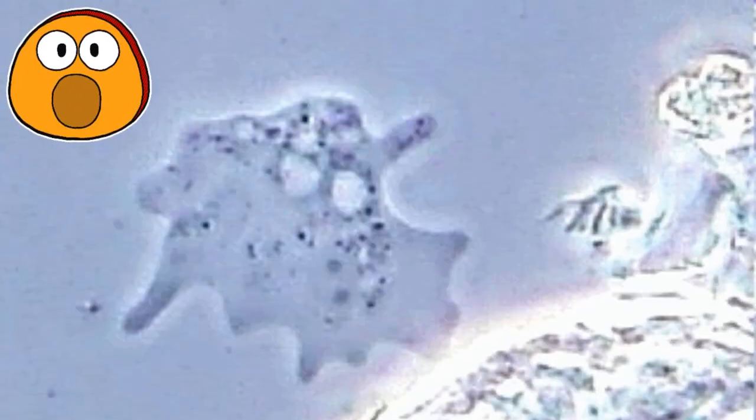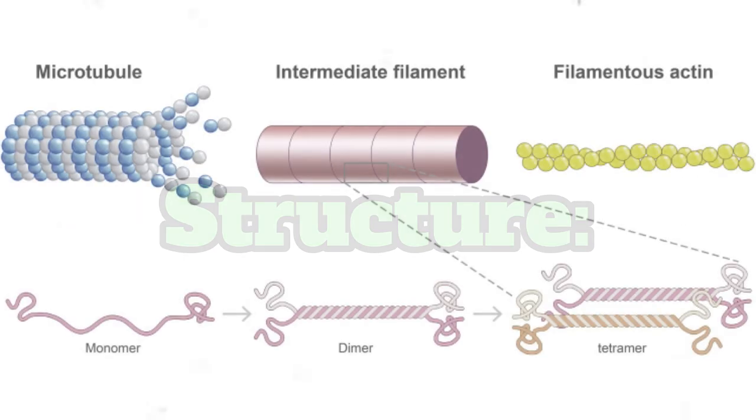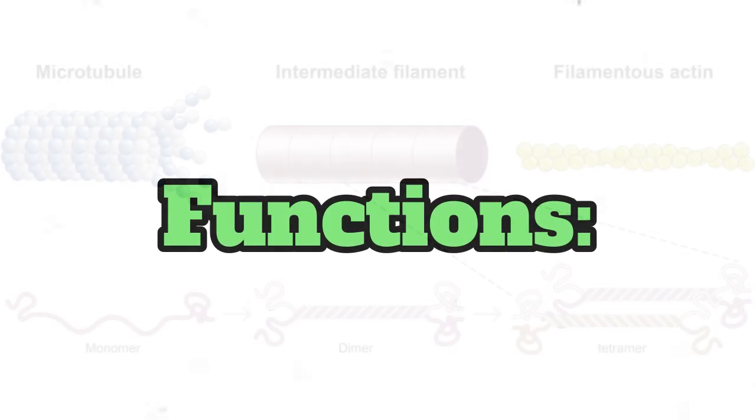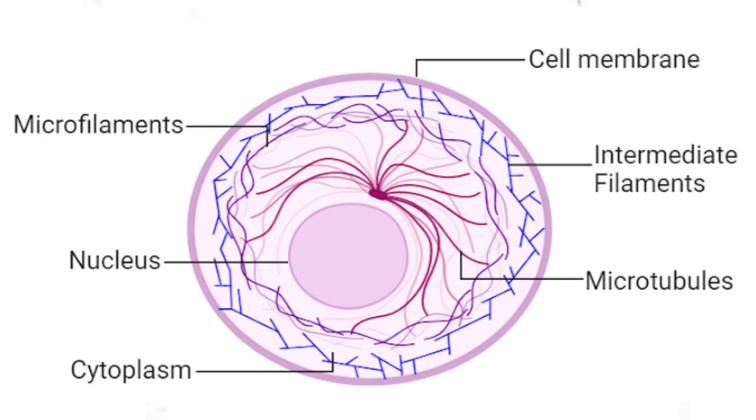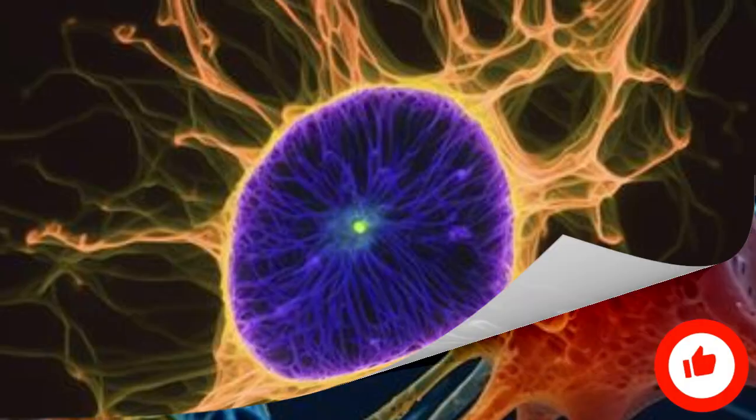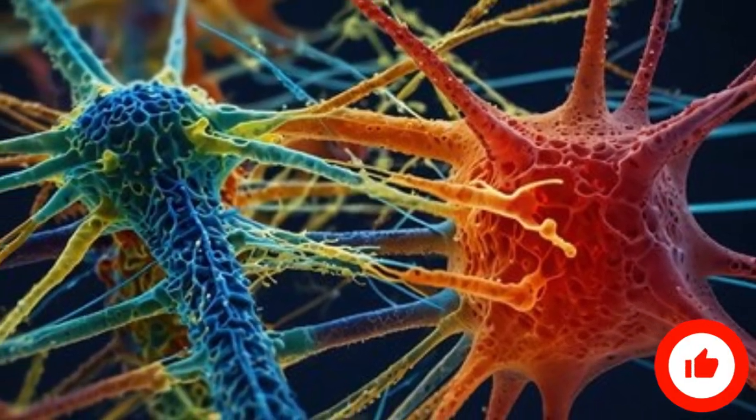Intermediate filaments. Structure: strong, rope-like fibers made of various proteins. Functions: provides mechanical strength and prevents the cell from collapsing, helps anchor the nucleus and organelles in place, protects cells from external stress. Fun fact: your hair, nails, and even skin are made of keratin, a type of intermediate filament.